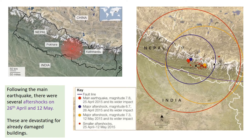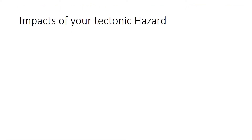Unfortunately for Nepal it wasn't just one earthquake — there were several aftershocks, one on the 26th of April and one on the 12th of May. These aftershocks are extremely devastating because a building that might have already been damaged in the first earthquake might then collapse completely in the aftershock. This earthquake event led to several significant impacts.